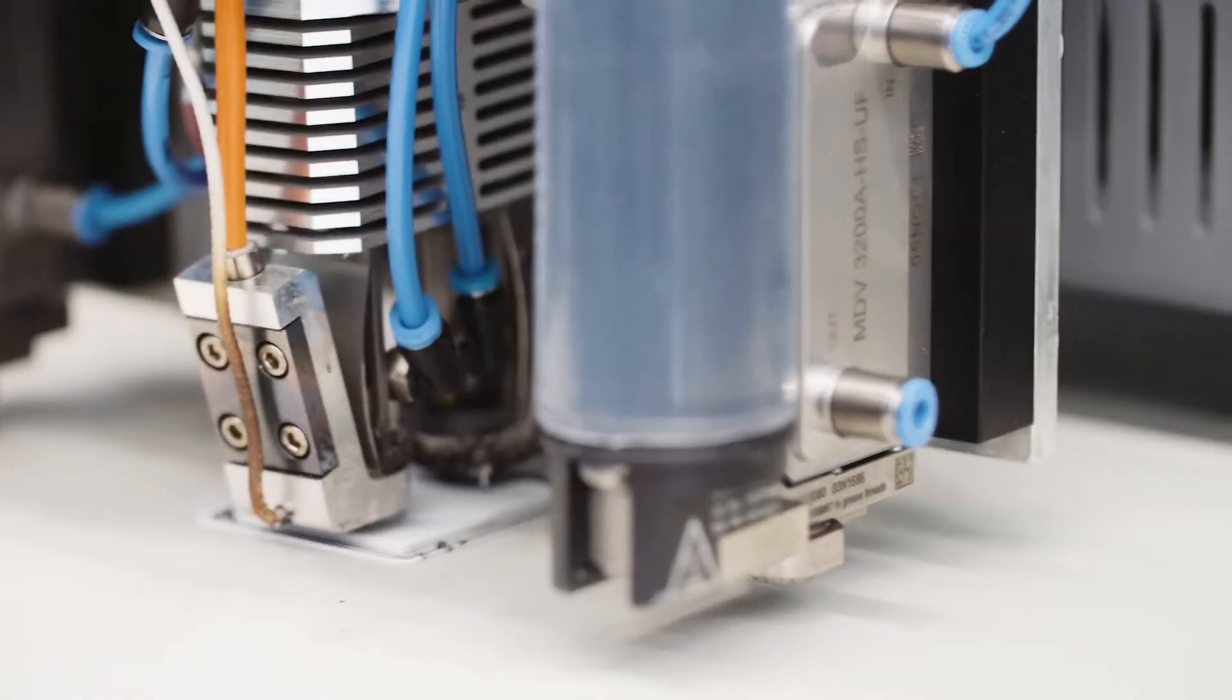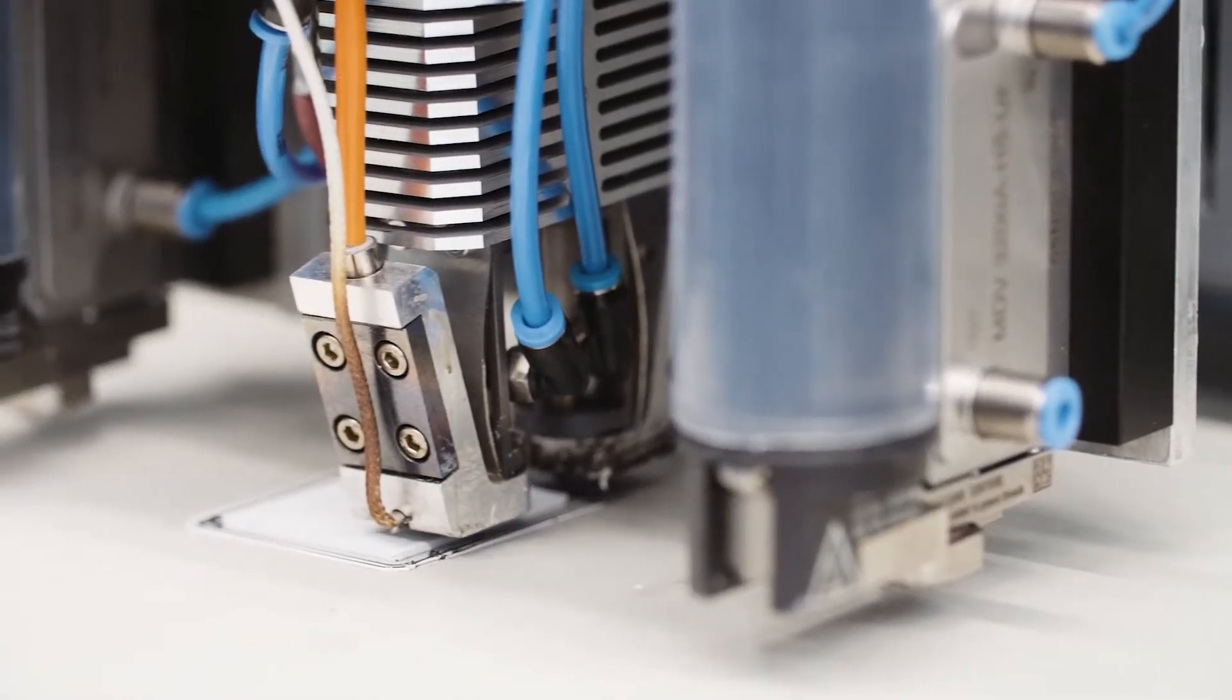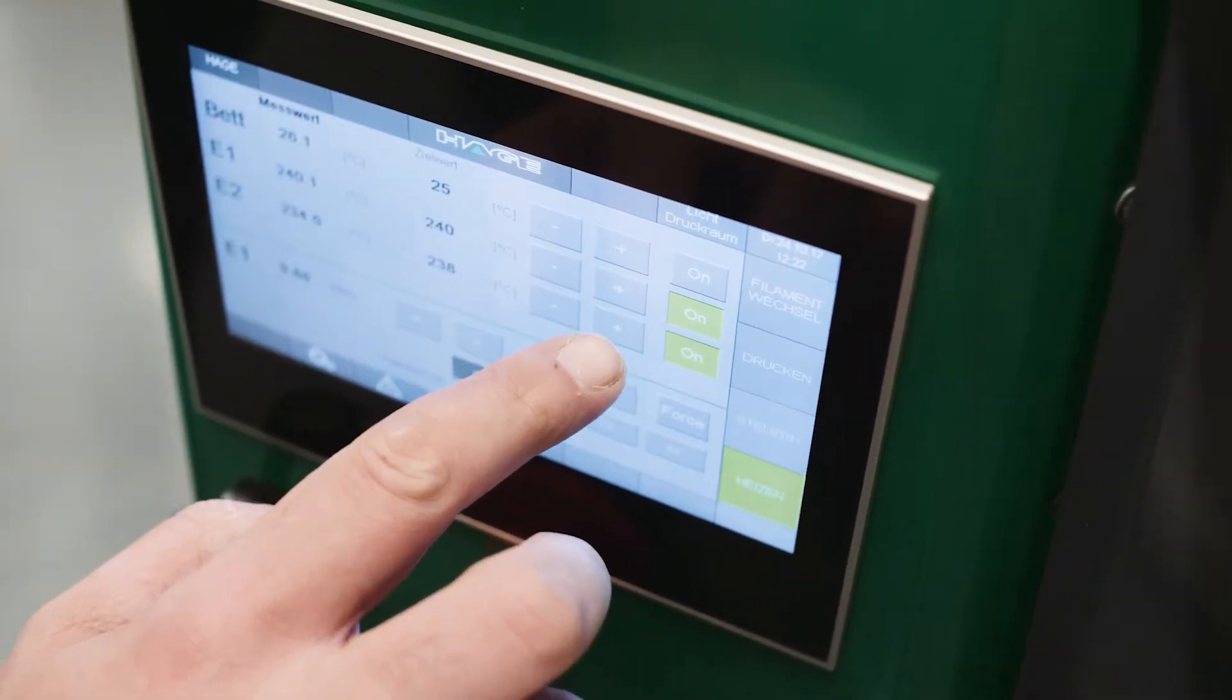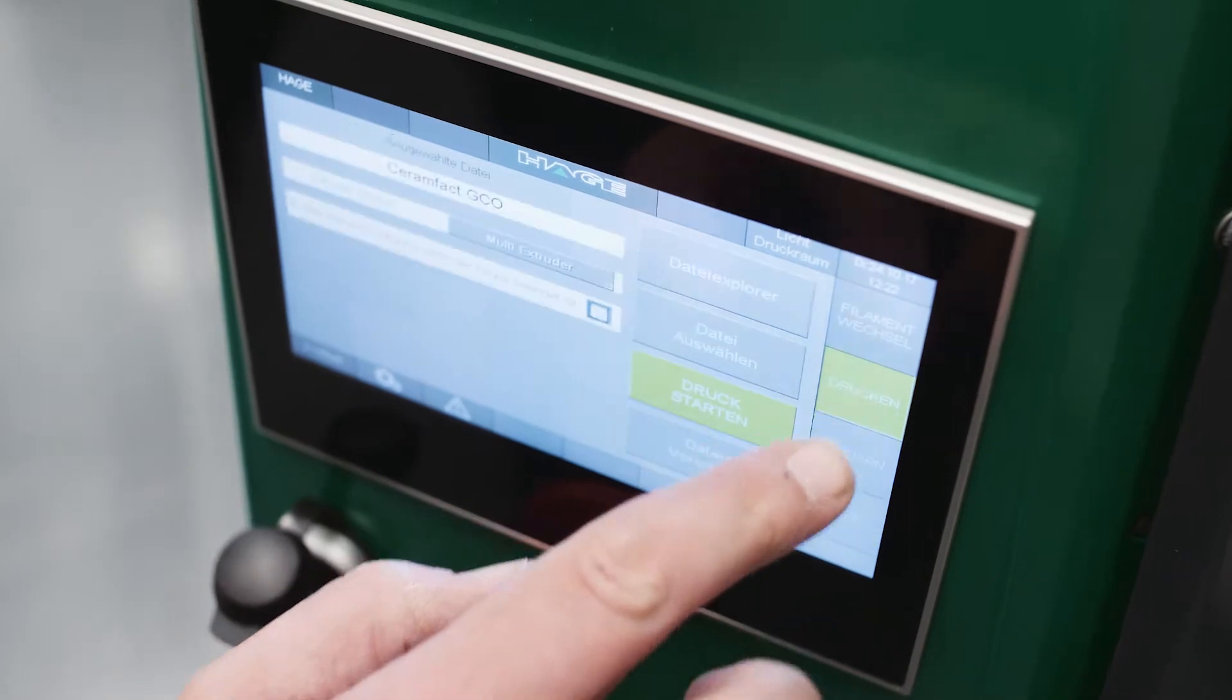When that layer is finished, the printing table is lowered by the thickness of the layer and another layer is added. In this way, layer upon layer, a complete component is built.